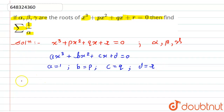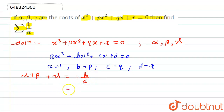Now we can find the sum terms. The sum of roots, alpha + beta + gamma, equals minus b divided by a, which gives us minus p divided by 1, that is minus p.